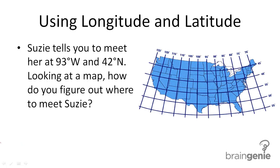So first we need to find our longitude line. Now 93 degrees west is a line that runs north to south but moves east to west. So we would look at our longitude lines for about 93, which is going to be about here.